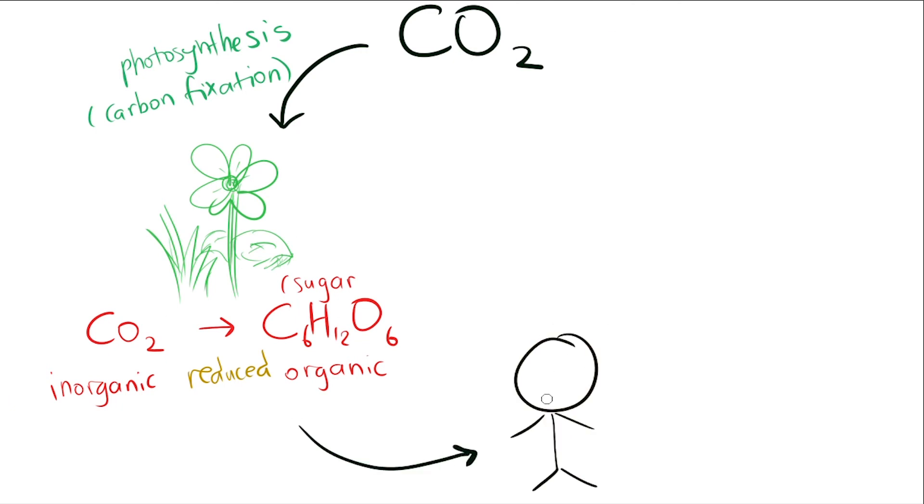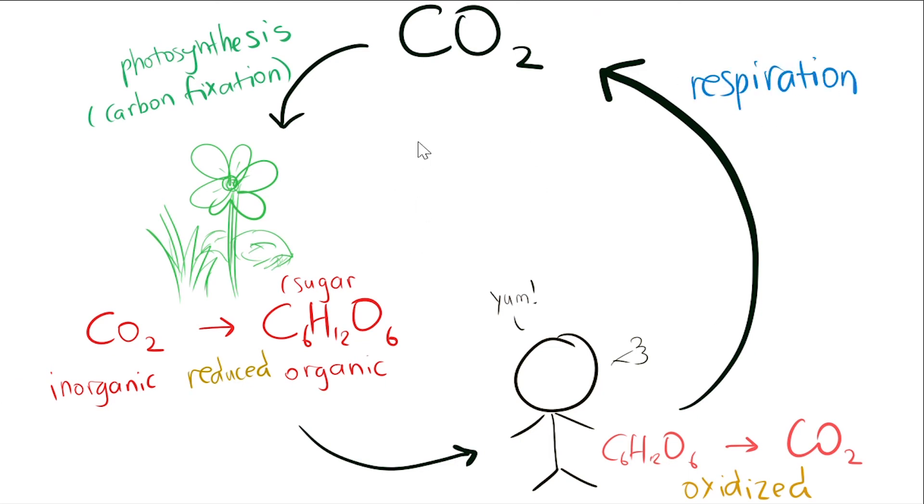Organisms feed on such reduced carbon to absorb the energy inside and grow. Through respiration, the organic carbon is converted into inorganic carbon and released back into the atmosphere. This is known as the fast carbon cycle.